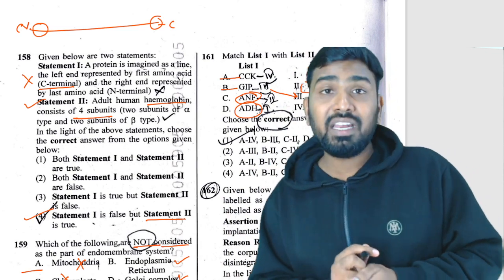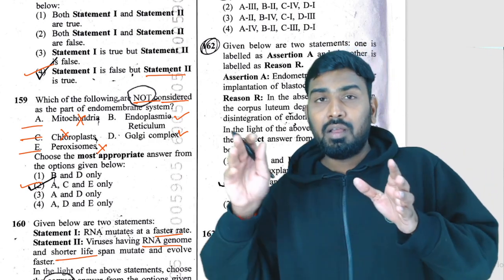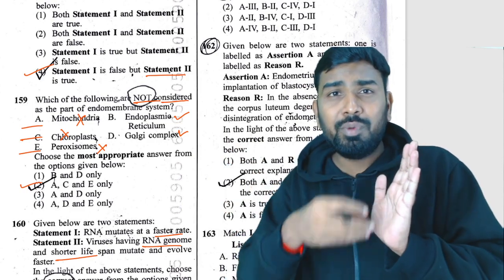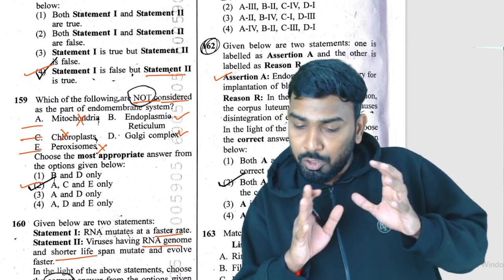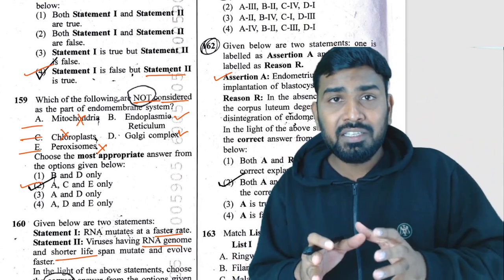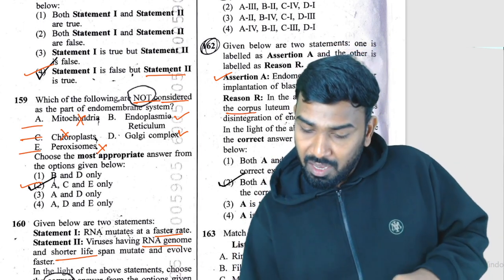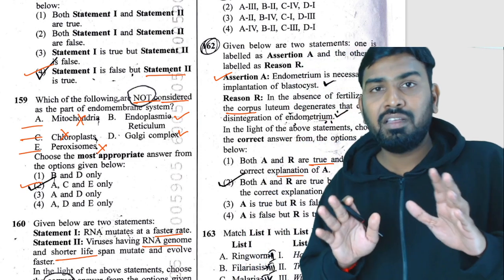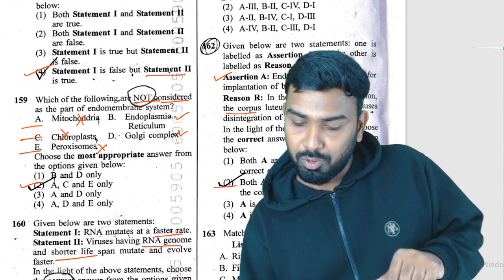Question 162: assertion — endometrium is necessary for implantation — correct, because blastocyst implantation occurs on the uterine endometrial lining. Reason — in the absence of fertilization, corpus luteum degenerates — also correct, forming corpus albicans. Both statements are true, but the reason is not the correct explanation of the assertion. So the answer is option 2.